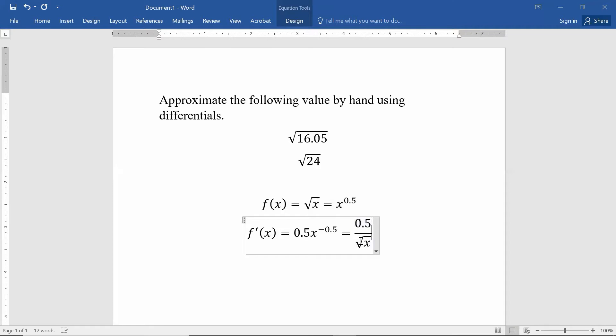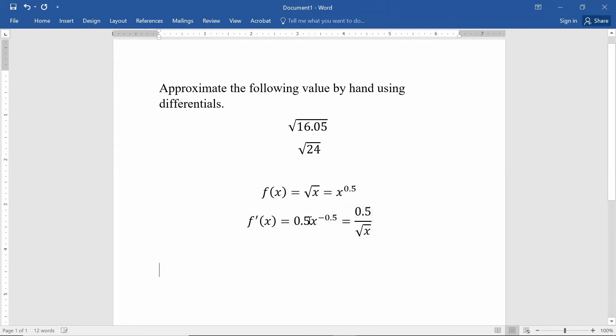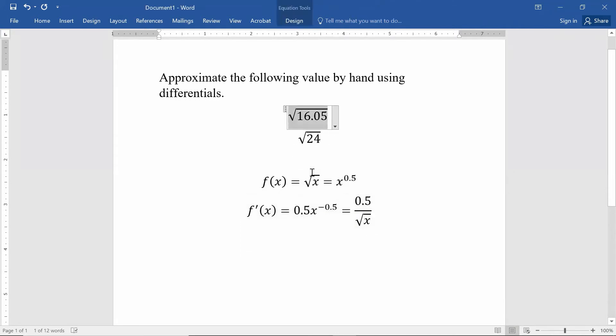So that is a great first step, finding the derivative, finding the value. Let's focus on 16.05. If I want to find the square root of 16.05, what I do is I say, well, that is close to something that I know. That's close to the square root of 16. I know that the square root of 16 is equal to 4. This is a positive square root, so this is close to 4.